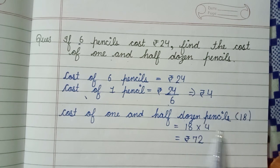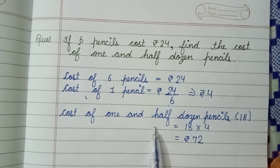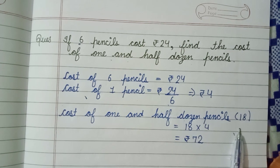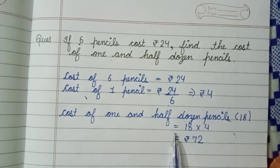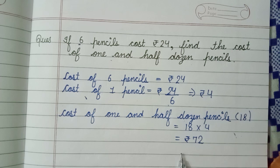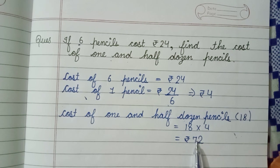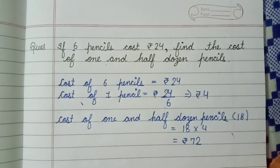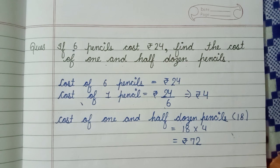We have 1 dozen equals 12 and half dozen equals 6, added to give 18, and 18 into 4 gives our answer of 72 rupees. If you liked this video, please like and share, and if you are new on my channel, please subscribe. Thanks for watching.